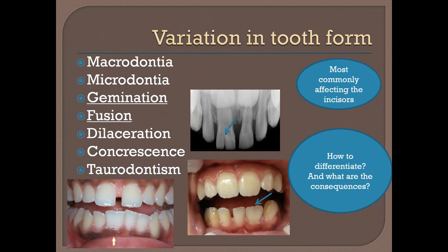Gemination and fusion — double teeth — we talked about differentiating between these two. This is an example of gemination, and this is an example of fusion. Here the lower right central is actually trying to split into two — that is gemination. Consequences include an abnormally large tooth that needs reshaping, sometimes extraction if severe, rotation of adjacent teeth, and crowding.